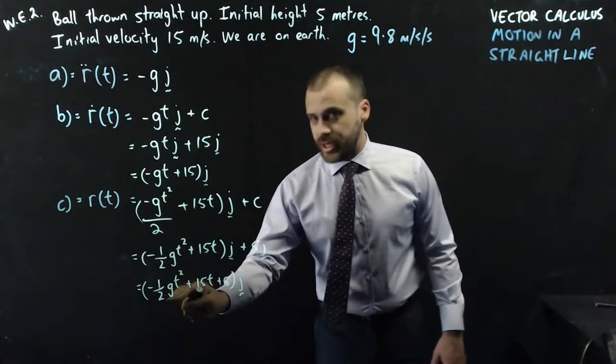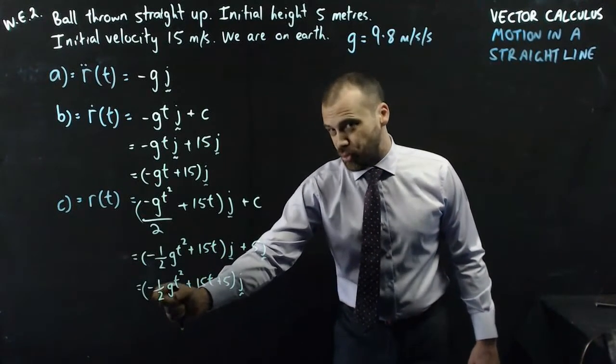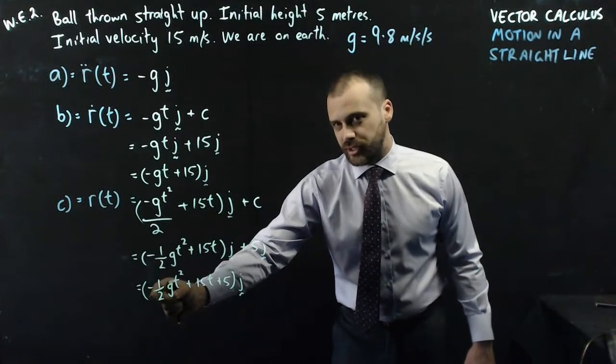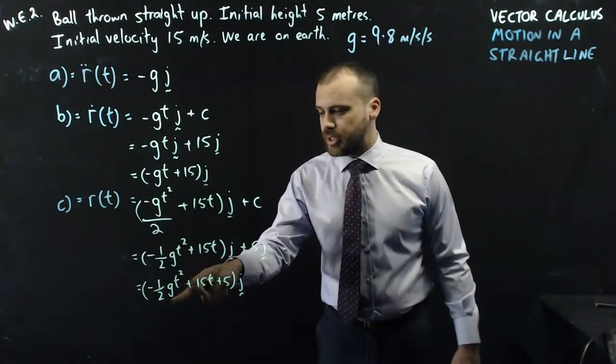Now always remember, g is a number. It's 9.8, which means that this bit here is -4.9, approximately. So don't get confused here, g is a number.